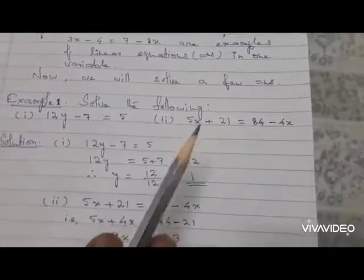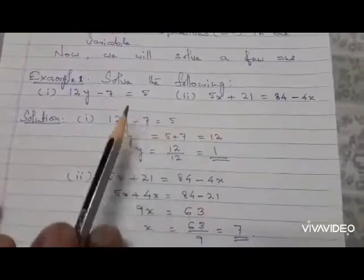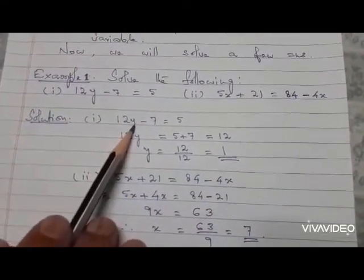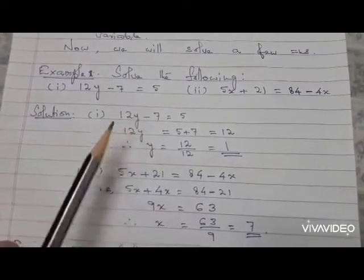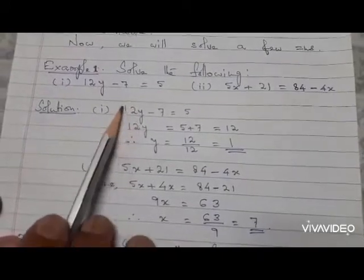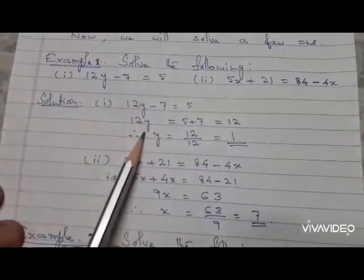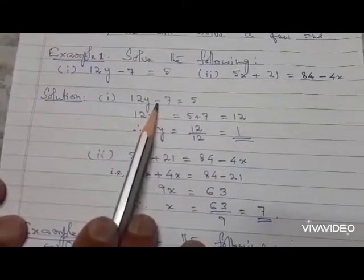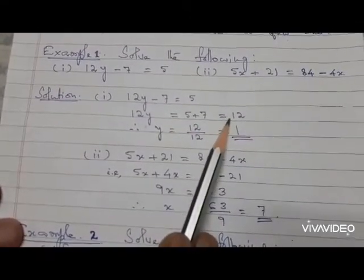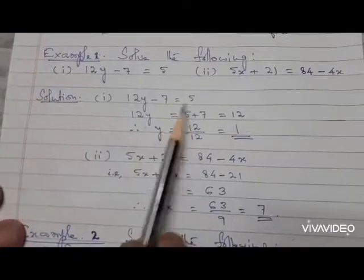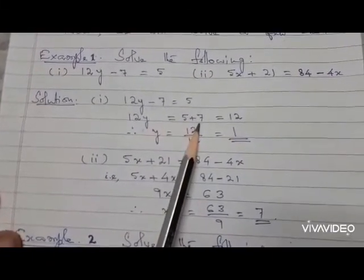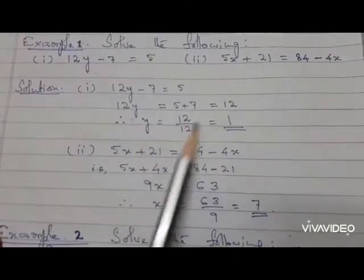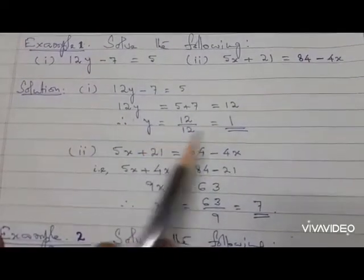Let's look at the first example carefully: 12y - 7 = 5. The term containing the variable goes to the left side, and the number minus 7 goes to the right side with 5. So 12y = 5 + 7, which gives 12y = 12. Therefore y = 12/12 = 1. So the value of the variable is 1.